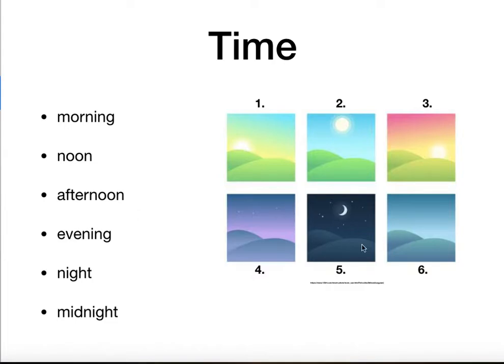Remember these two pictures. Night — it is dark, there is no sun. And number five is midnight. It is very dark and it is 12 a.m., the middle of the night.